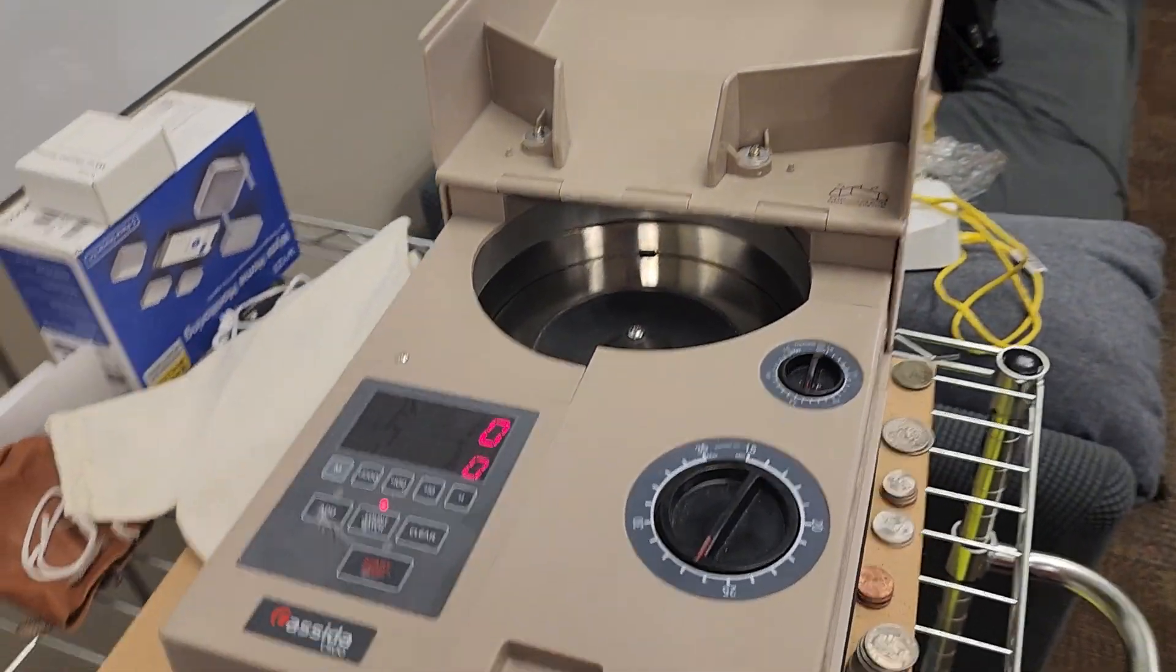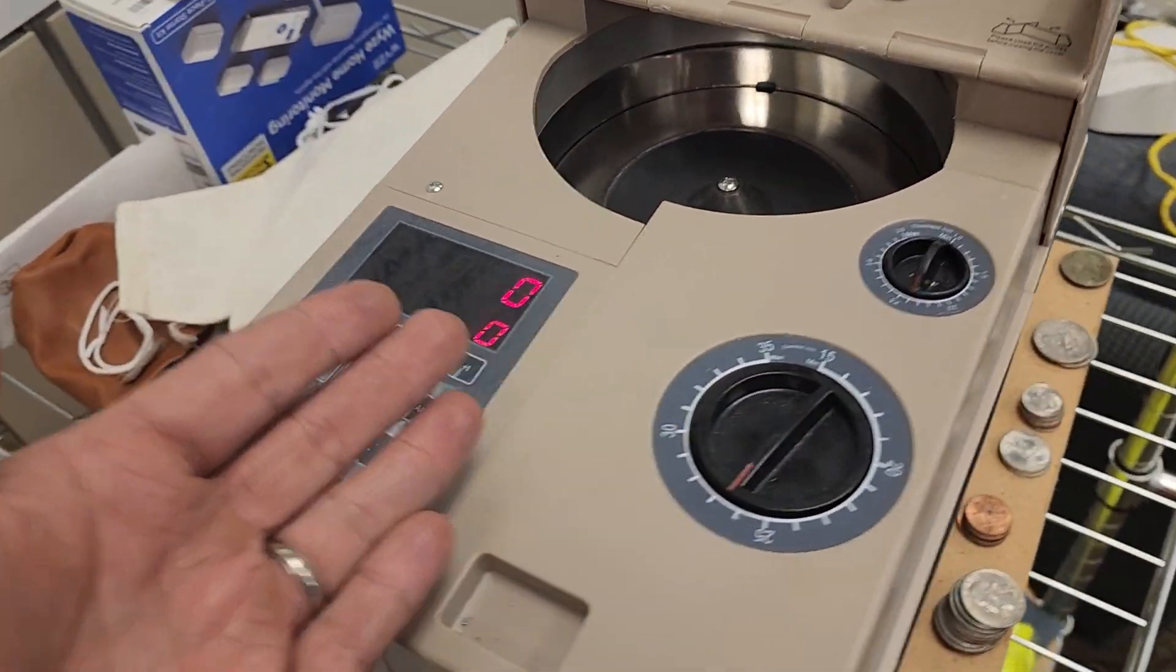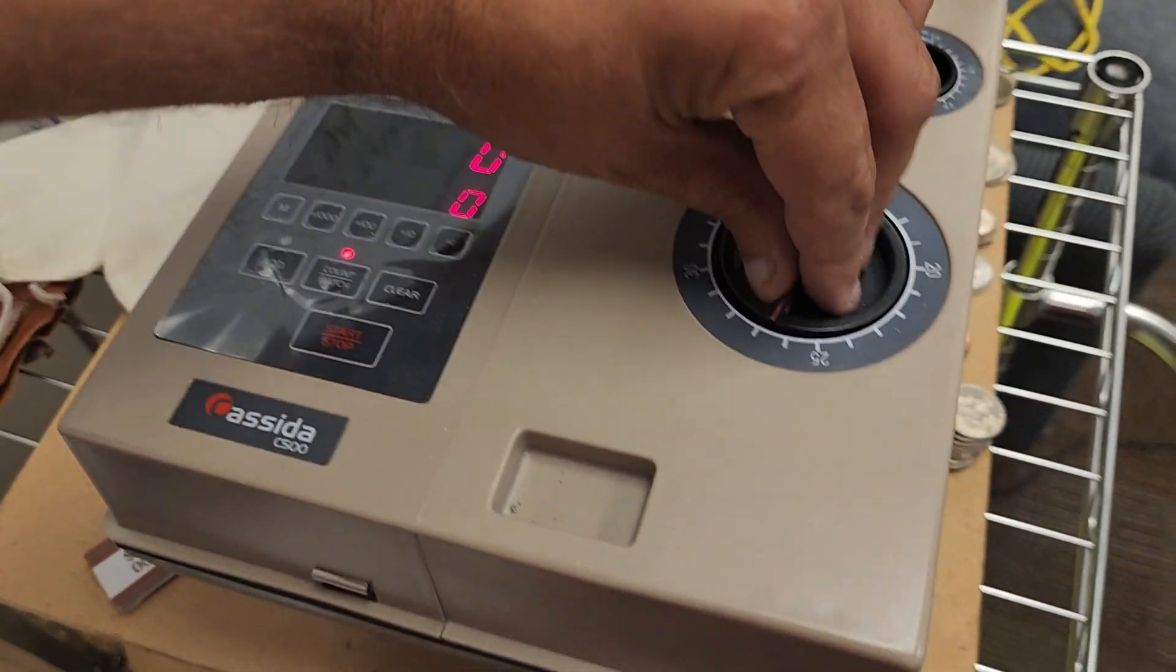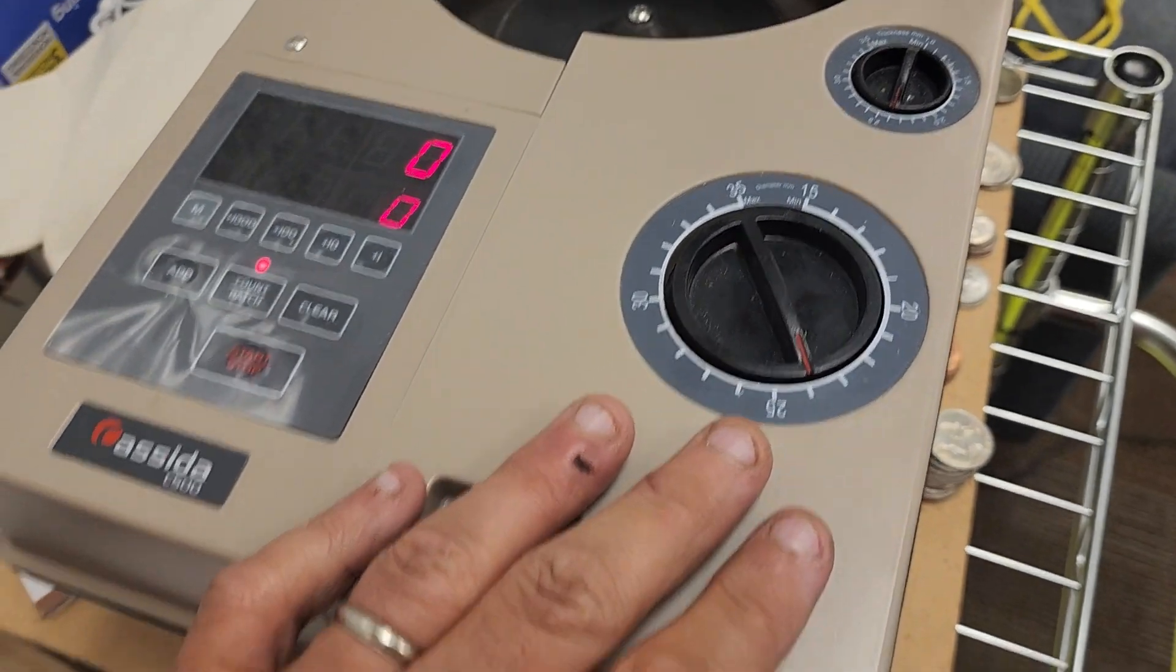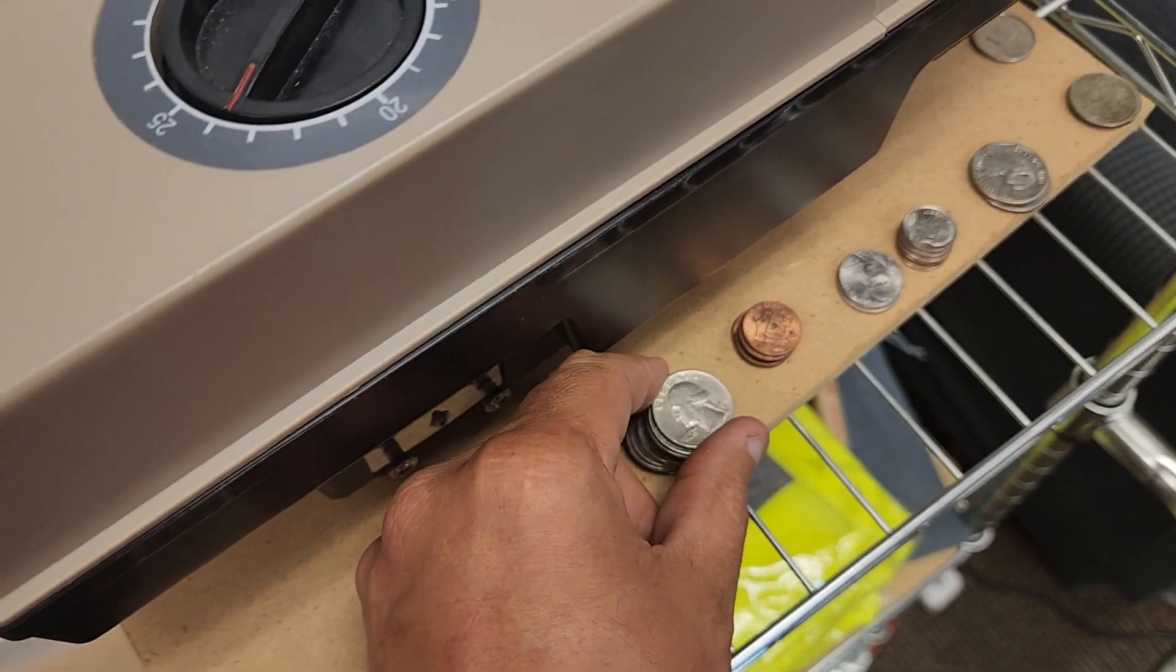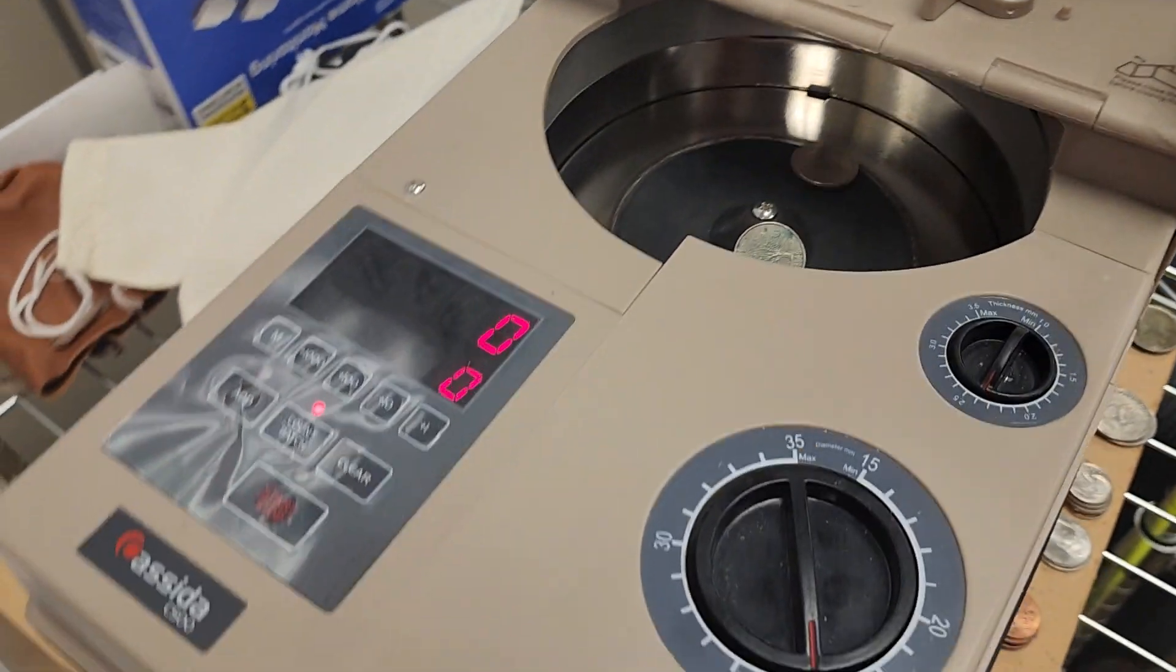All right guys, we've had requests to explain how my coin sorter works. So the deal is the pro and the con with this one is you have to set it for the coins you want to count. So right now it's set to count quarters for my laundromat.